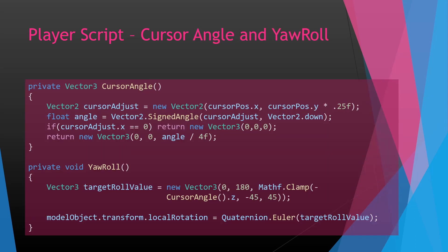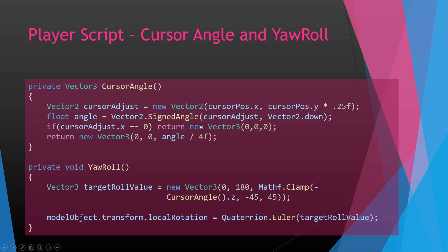The cursor angle function finds the angle of the cursor relative to Vector2.down. What we're trying to find is: if the cursor is at a certain angle relative to the center of the screen, our ship should roll to match that. I have a divided by 4f here for some tweaks and adjustments. So cursorAdjust is cursorPosition.x and cursorPosition.y times 0.25f, and from that we find the angle. There's also a small dead zone set to zero here — there's a lot of refactoring to be done, but this gets the job done.